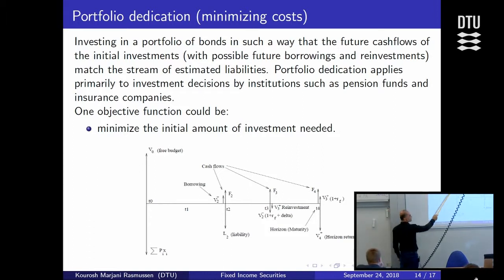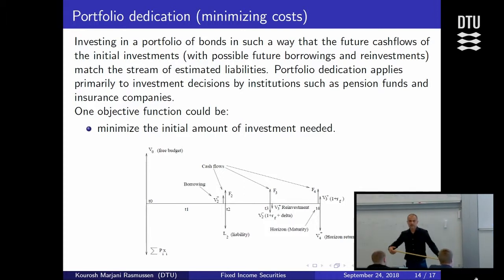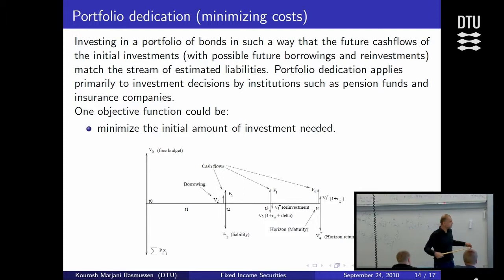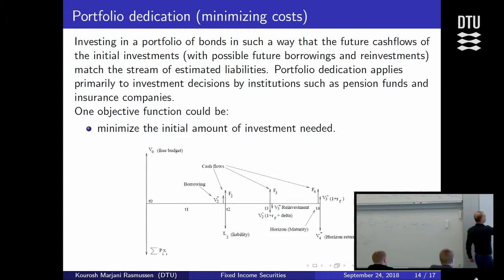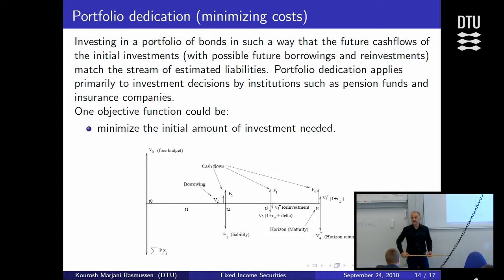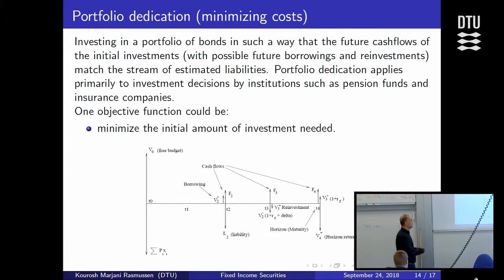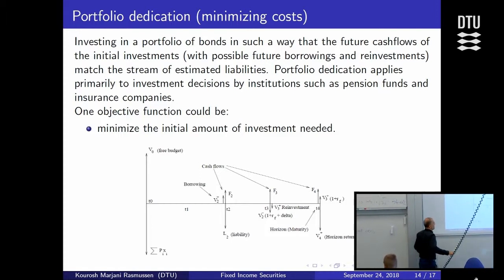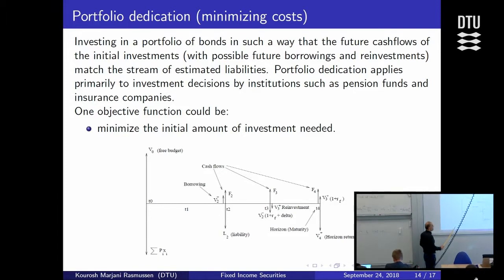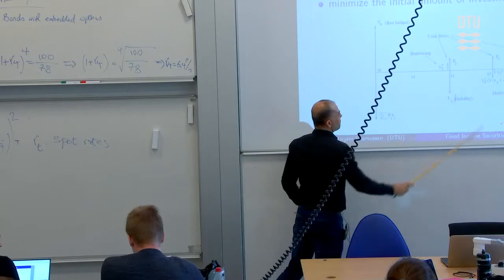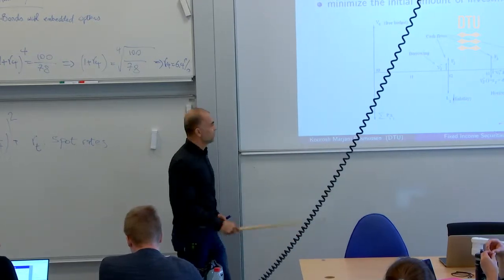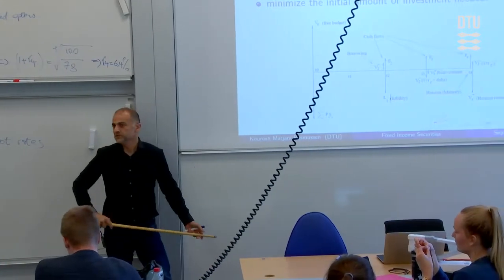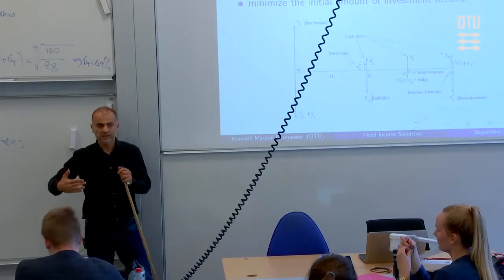Essentially, you have a free budget. Imagine you work in a pension fund as a portfolio manager — you're given a budget and asked to minimize it for the sake of your company. You want to do it in such a way that you dedicate a cash flow of liabilities to a cash flow of assets that you're going to have by buying some bonds.